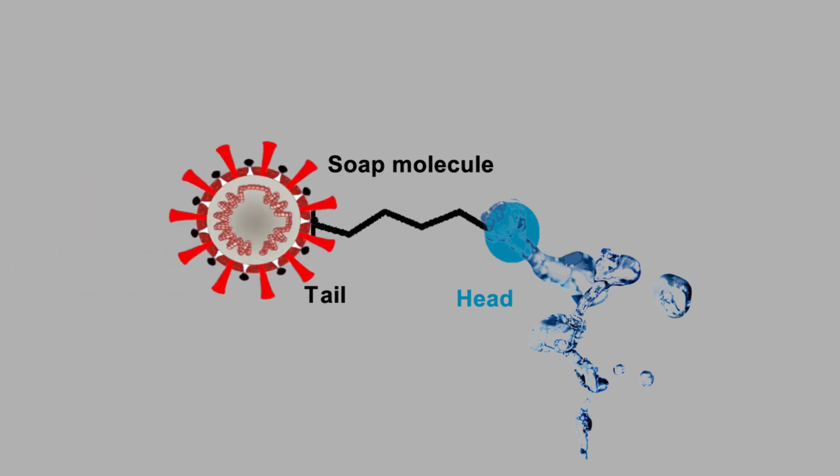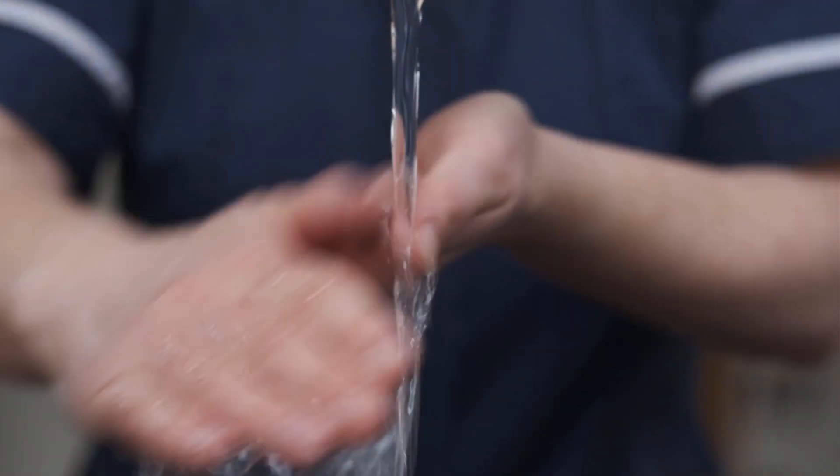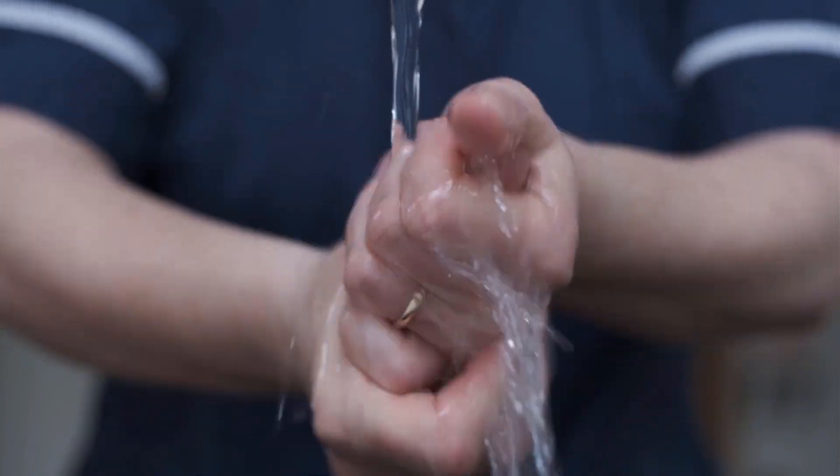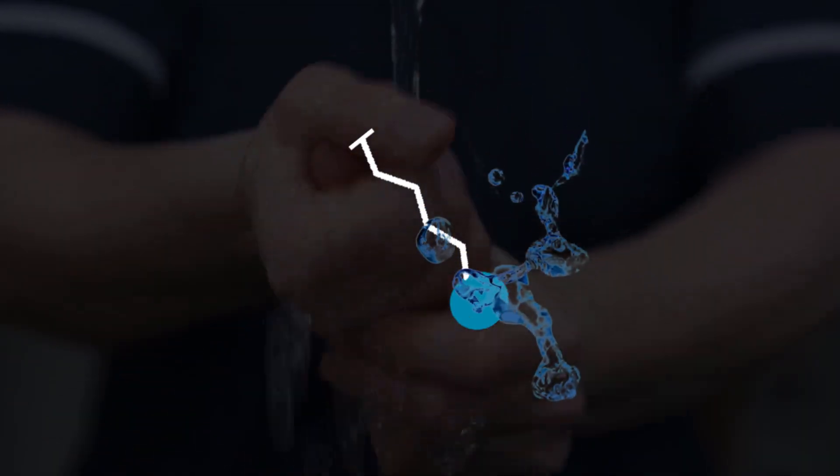Remember, this is the main mechanism and power of soap to destroy viruses. When you wash your hands with soap, the water molecules make bonding with the head, and the tail hooks up with coronavirus because coronavirus contains oily lipid membrane that is attracted by this tail.